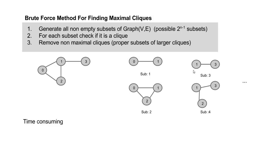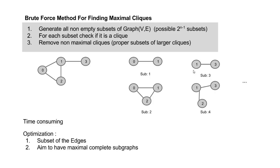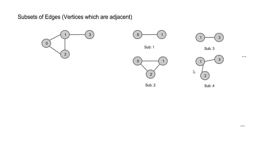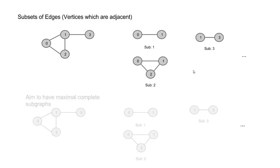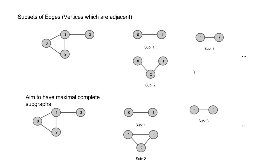The problem is it is time consuming. However, we can optimize the brute force model further. Instead of subsets of all nodes, we take subsets of edges — Sub4 will disappear because there is no edge between nodes 2 and 3. Then we aim to have maximal complete subgraphs: take Sub1, try to add as many nodes as possible. Adding node 2 still forms a complete subgraph, but adding node 3 does not. So Sub1 becomes Sub2, and we have found two maximal cliques: Sub2 and Sub3.